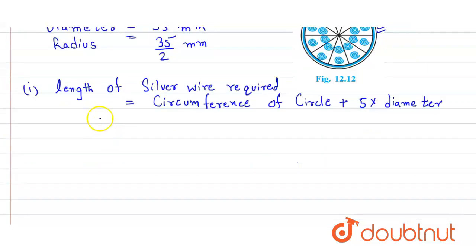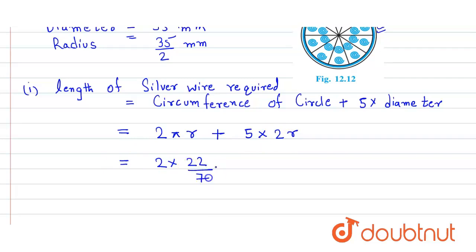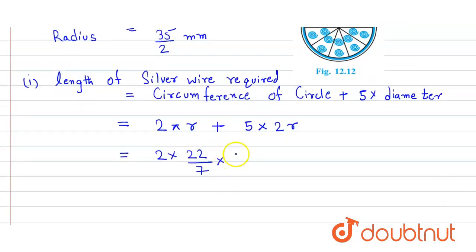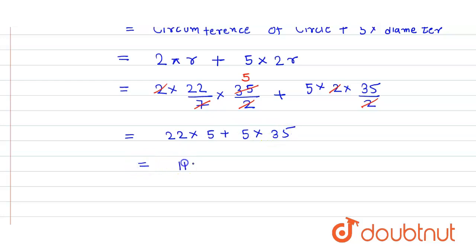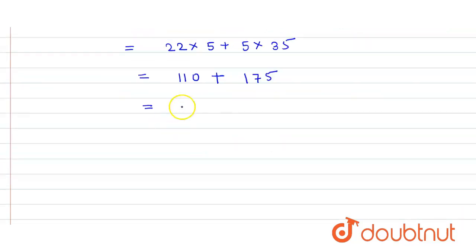The formula for the circumference of a circle is 2πr, where r is the radius, plus 5 into diameter, which is twice the radius. Substituting: 2 × (22/7) × (35/2) + 5 × 2 × (35/2). Simplifying, the 2s and 7 cancel with 35 giving 5, so we get 22 × 5 + 5 × 35, which is 110 + 175 = 285 millimeters.